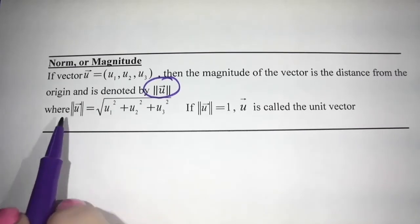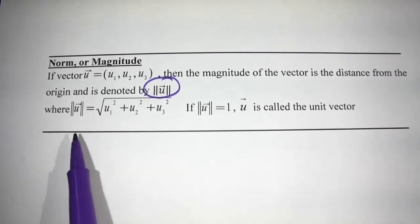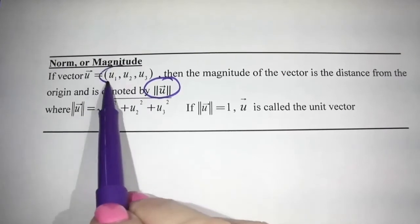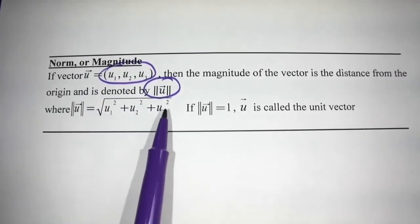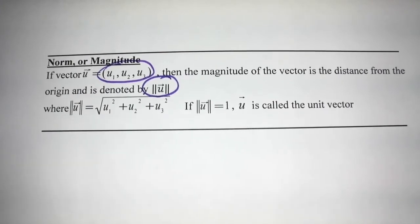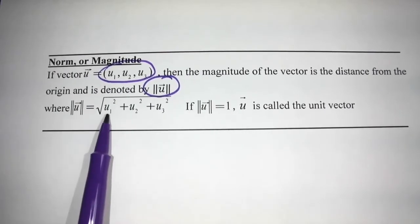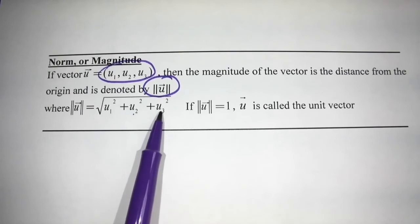So if we have two lines beside the vector, all we do to calculate the magnitude is we take each of the components U1, U2, and U3, and we square them and we put it under a square root. So it becomes square root U1 squared plus U2 squared plus U3 squared.